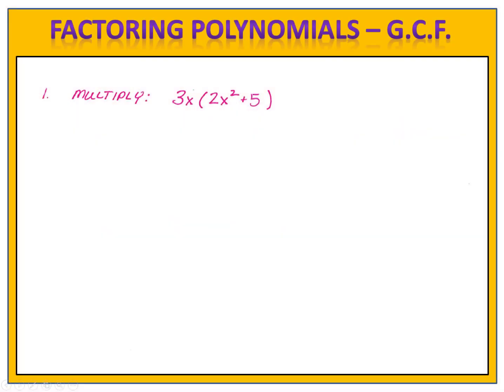We know that we can multiply polynomials by using the distributive property. For example, we want to multiply 3x times 2x squared plus 5. To do this, we simply use the distributive property and multiply both terms in the parentheses by the 3x, and we end up with the result 6x to the third plus 15x. But what if we want to go backward? What if we start with 6x to the third plus 15x and we want our answer to be 3x times 2x squared plus 5?